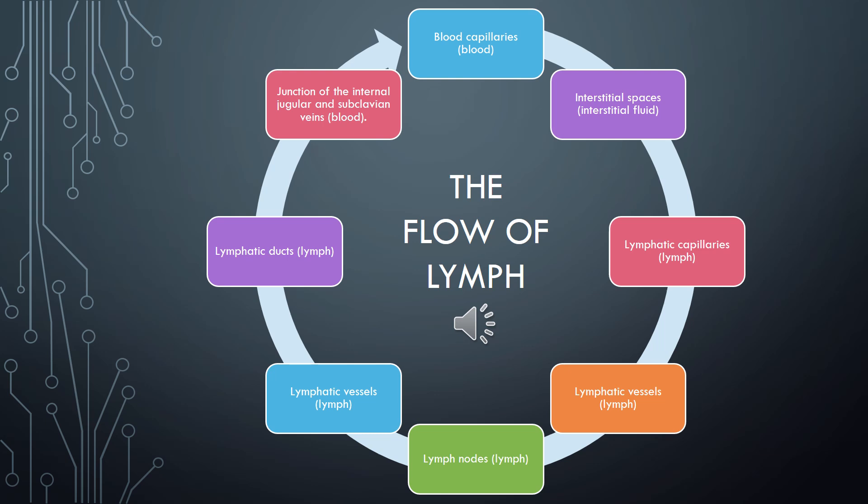Lymphatic vessels, much like the veins of the circulatory system, have one-way valves to stop the backflow of lymph. From the lymphatic vessels, lymph will move through to lymph nodes, and it will then move through to more lymphatic vessels.